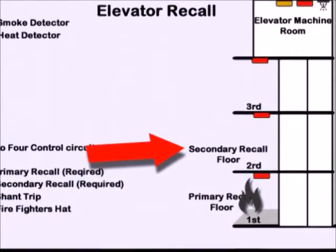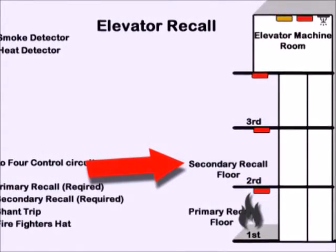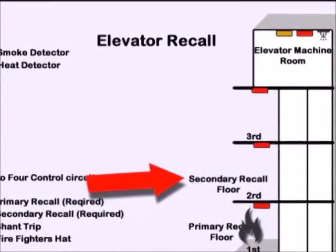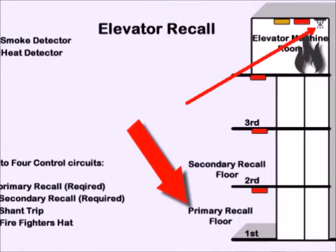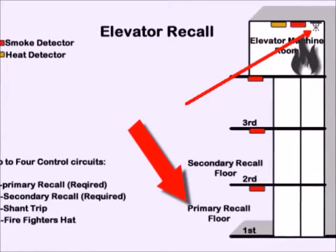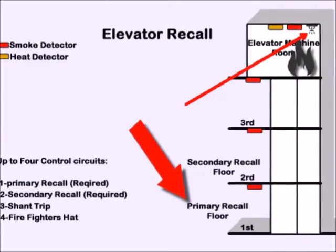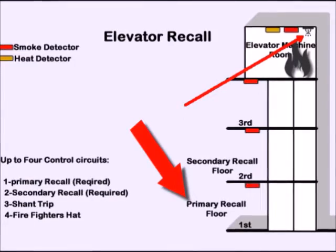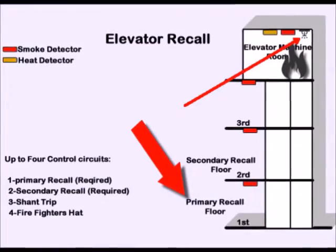In the event that there is an incident on the first floor, elevators will home onto the secondary recall floor, which is usually the second floor or basement. Shunt trip will trigger a relay that indicates to the elevator controller that it needs to kill the power to the elevator prior to the sprinkler head opening up in the elevator machine room. The shunt trip relay is triggered when the heat detector in the elevator machine room activates, and the elevators will home to the primary floor, which is the first floor.